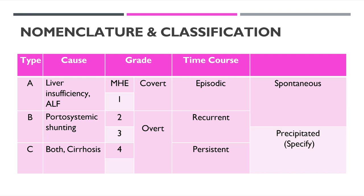Regarding grading, the Conn classification describes grade one through four. In patients who do not have any neurological or psychiatric abnormalities on clinical examination and whose mini mental score is normal, but who show abnormalities on psychometric, psychophysiological, or neurophysiological tests — this entity was initially called subclinical or latent hepatic encephalopathy, but nowadays we call it minimal hepatic encephalopathy.